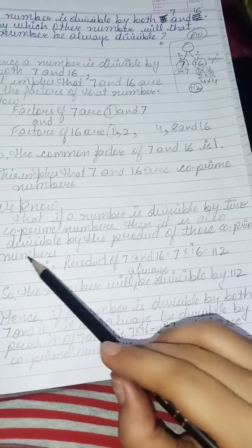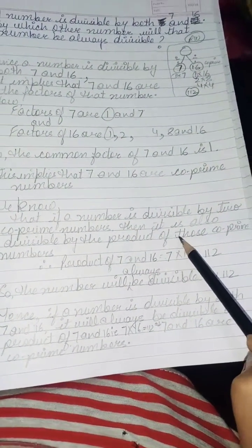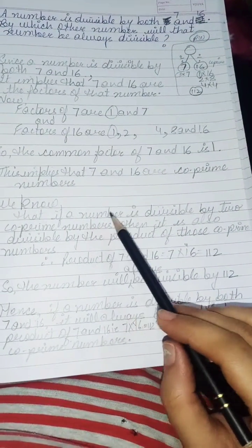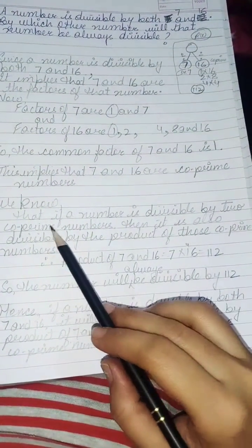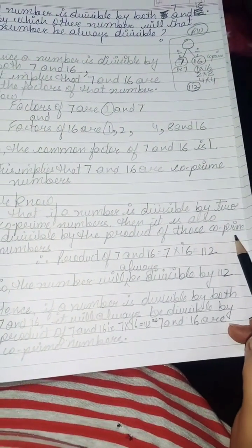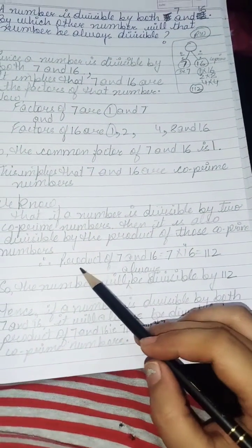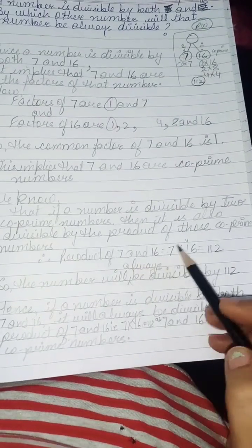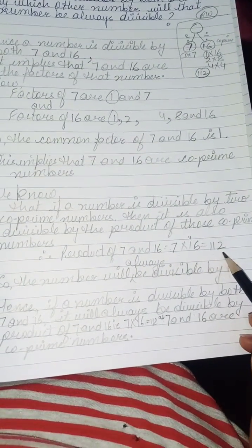And we know, now here we have to mention the property which we have already learnt, that if a number is divisible by two co-prime numbers, then it is also divisible by the product of those co-prime numbers. And product of co-prime numbers here is 7 into 16, that is 112.